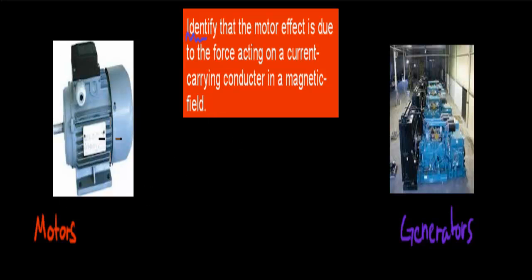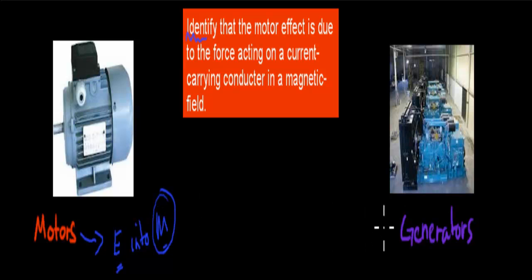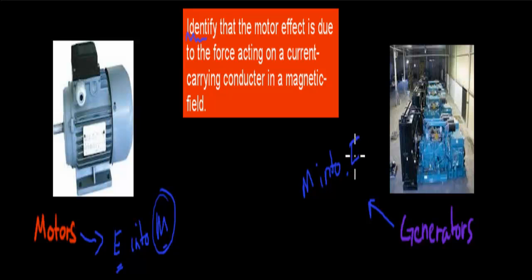What motors are is these kind of things. What they do is help us turn electrical energy into mechanical energy — E for electrical, M for mechanical. That means we can turn on electricity and use those motors to make things move because the electricity turns into mechanical energy. Whereas generators do the opposite: they turn mechanical energy into electrical energy.